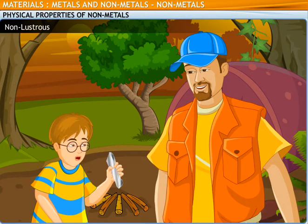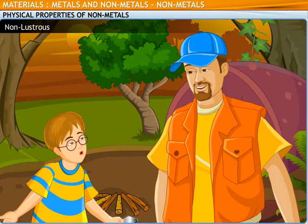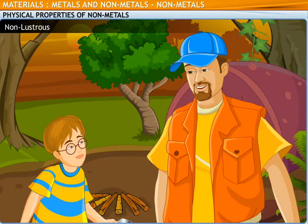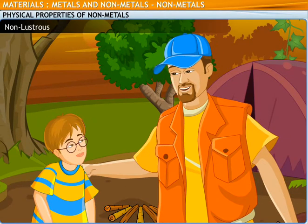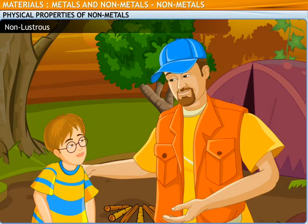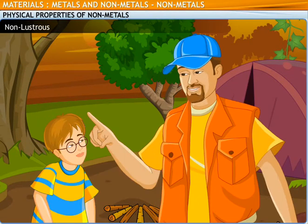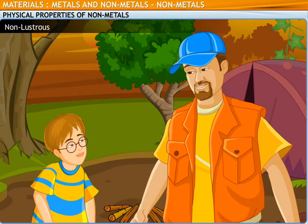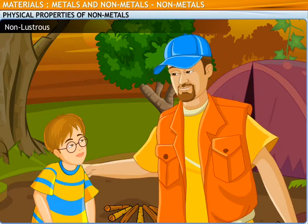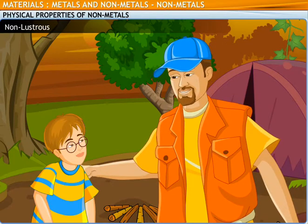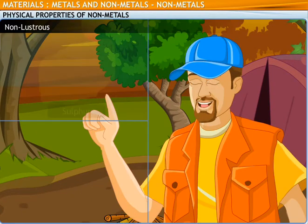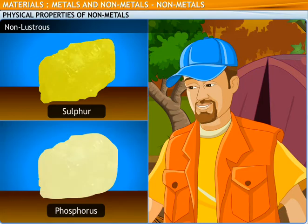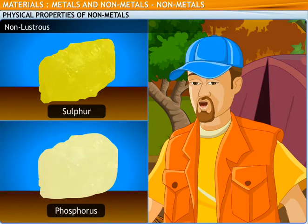Wow! The aluminium packaging is shining. Yes, but unlike metals, non-metals do not shine. They have a dull appearance. For example, the surface of sulfur and phosphorus do not shine.